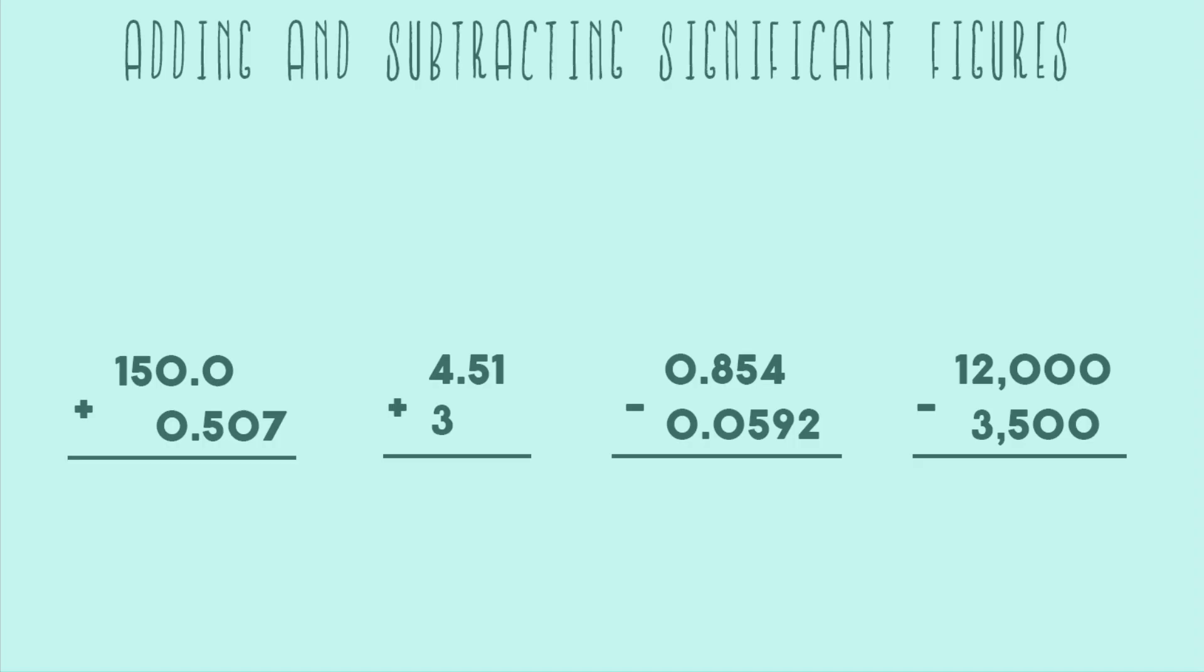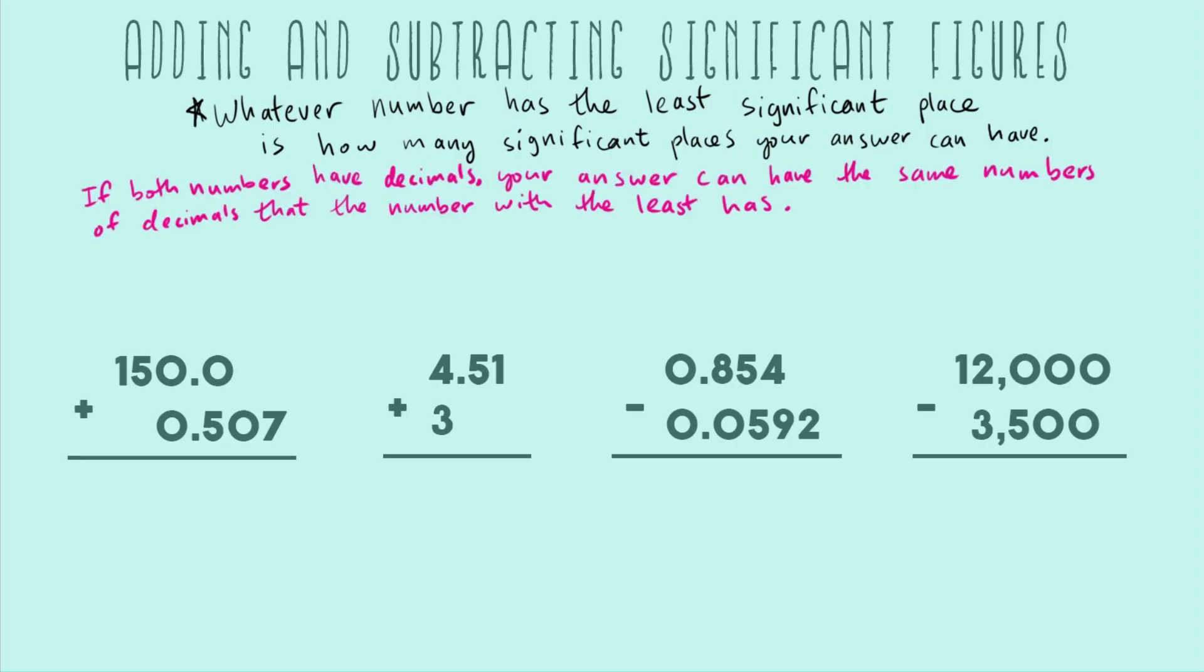The rule for addition and subtraction is that whatever number has the least significant place is how many significant places your answer can have. The next rule is just if both your numbers have decimals. If both numbers have decimals, your answer can have the same number of decimals that the number with the least has.